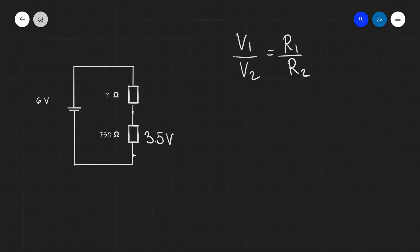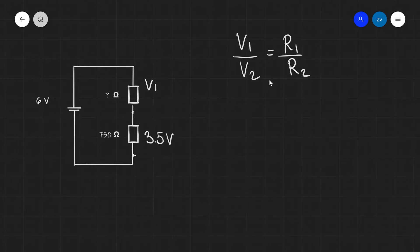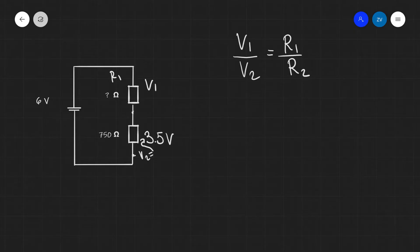Another equation which we are given in the formula sheet is the following: V1 over V2 is equal to R1 over R2. In this equation, V1 is the potential difference across one of the components — let's say this one here is V1 — and V2 is the potential difference across the other component, which in this case is equal to 3.5 volts. R1 is the resistance we're looking for, and R2 will be the resistance of the other component, which in this case is 750 ohms. Now if we know three of those quantities, we can work out the fourth.